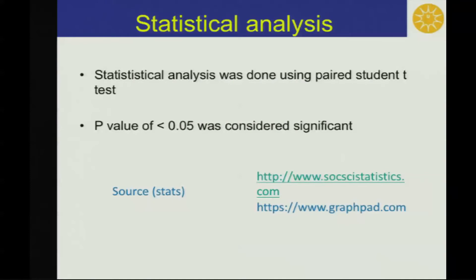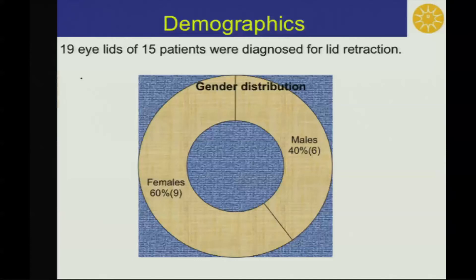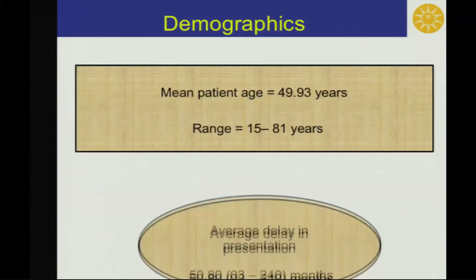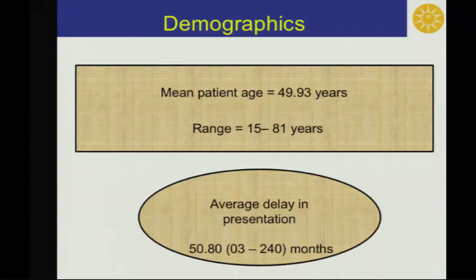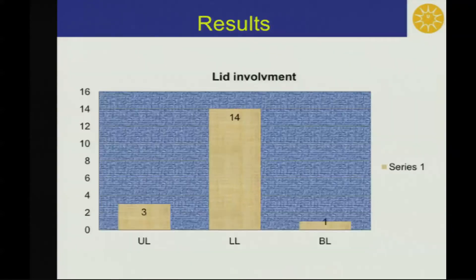Statistical analysis was done using paired student t-test, and a p-value of 0.05 was considered significant. 40% were males and 60% were females. Mean patient age was 49.93 years, and average delay in presentation was 50 months.